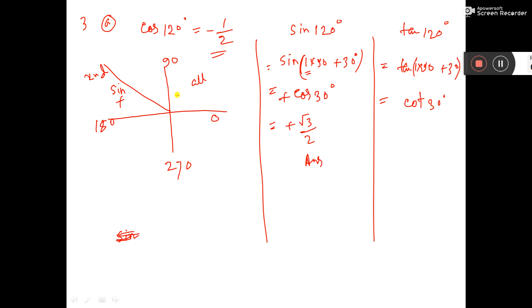And it is second quadrant means sin only positive, our sum is tan. So here also negative. And what is the value of cot 30? It is root over 3. So this is the answer.